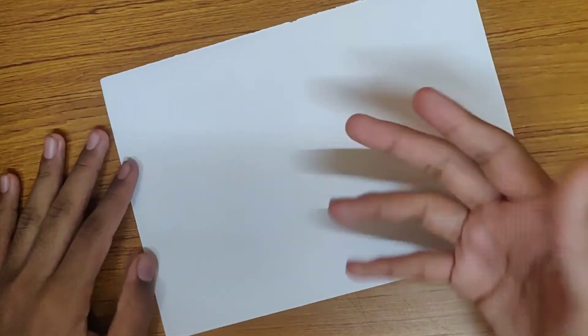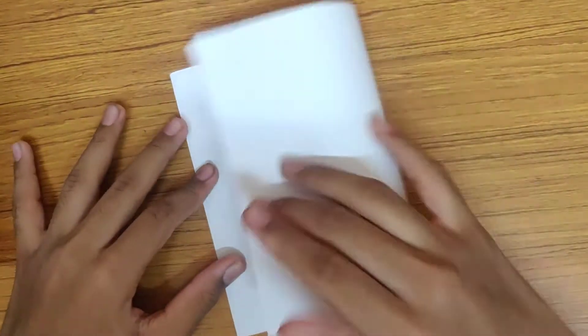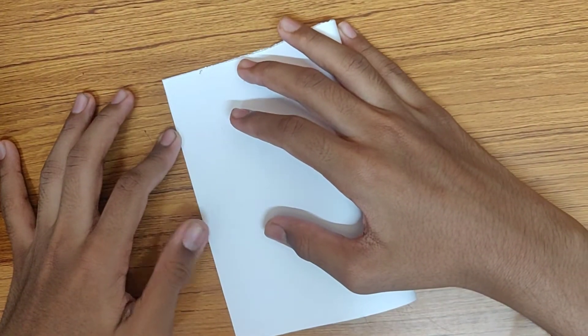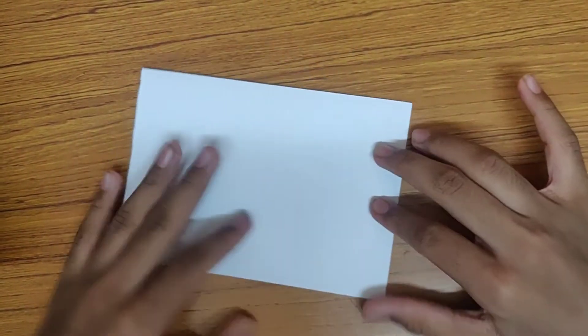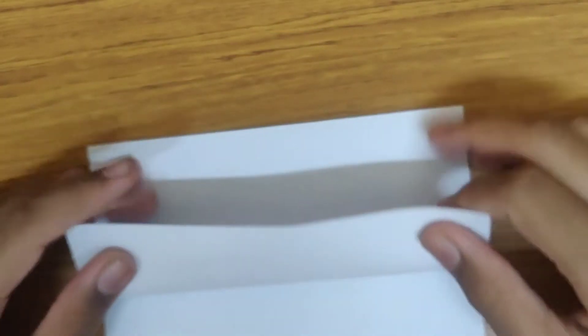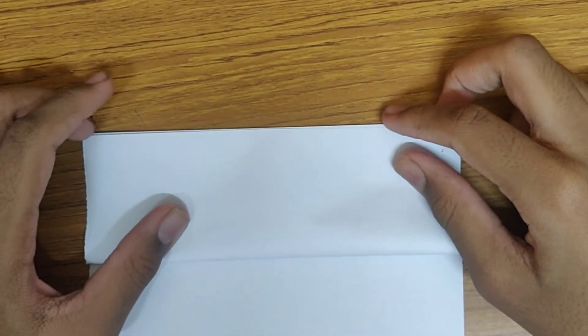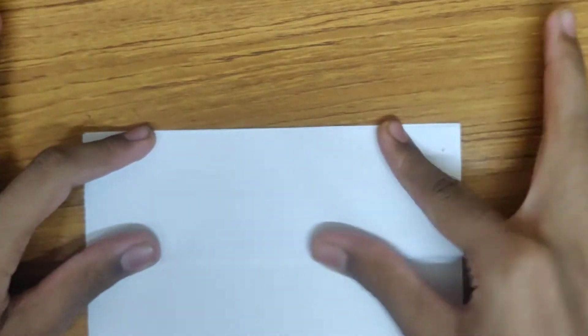Now let's start, we just have a couple of folds, it's pretty easy to remember. First let's fold into half like this, crease it well. Now, let me zoom in a bit. Take this flap and fold it like this, crease it well.